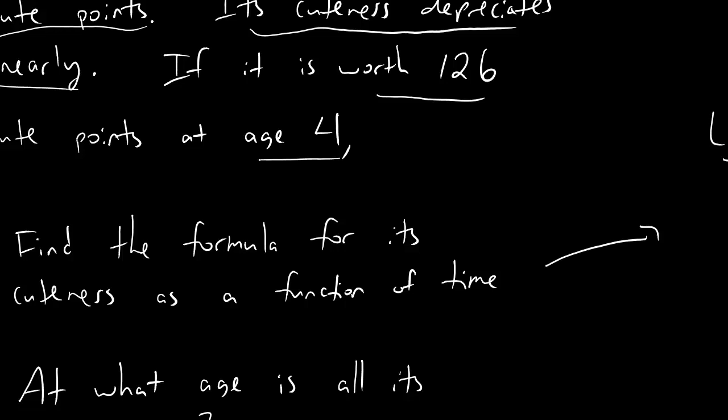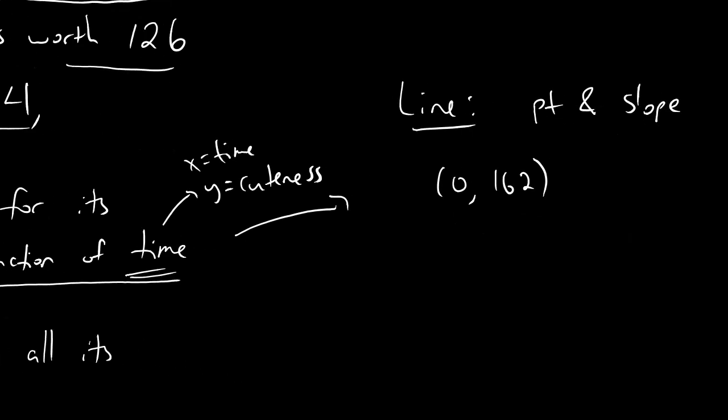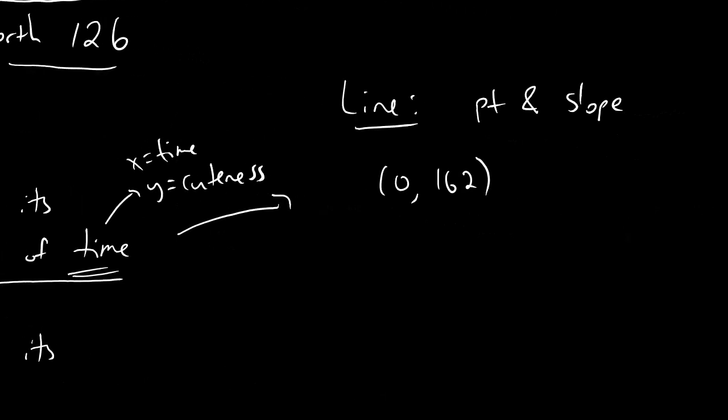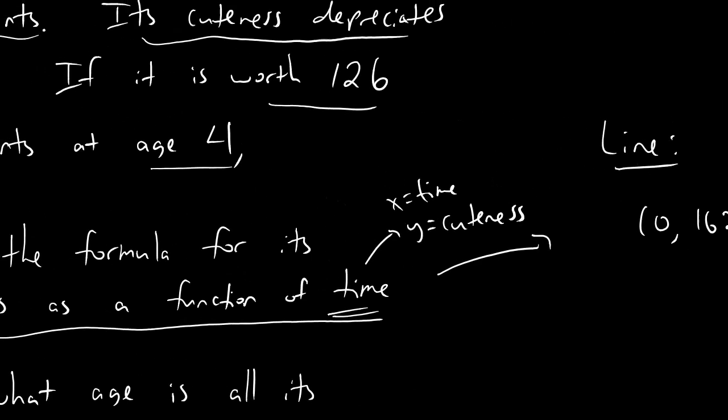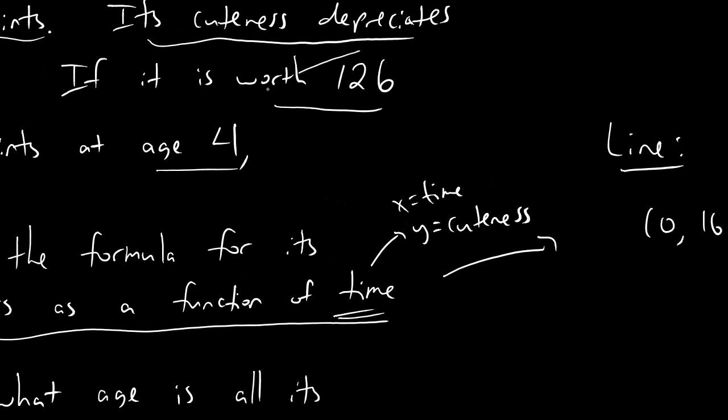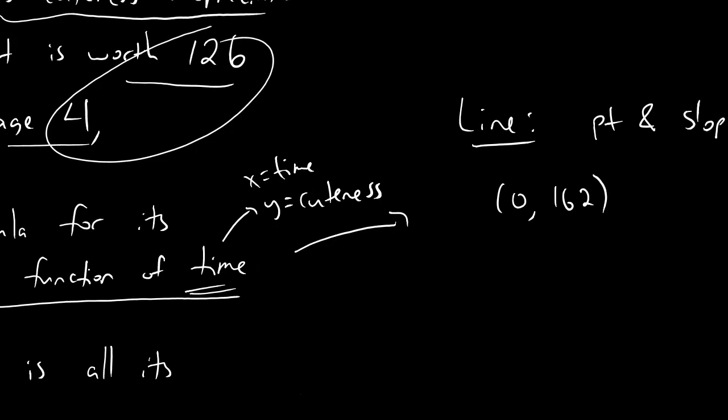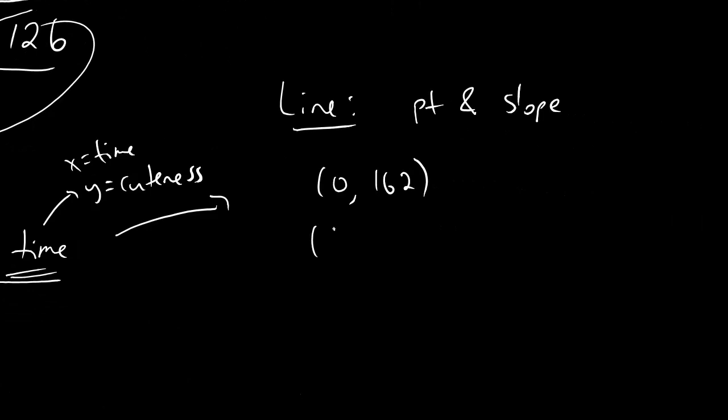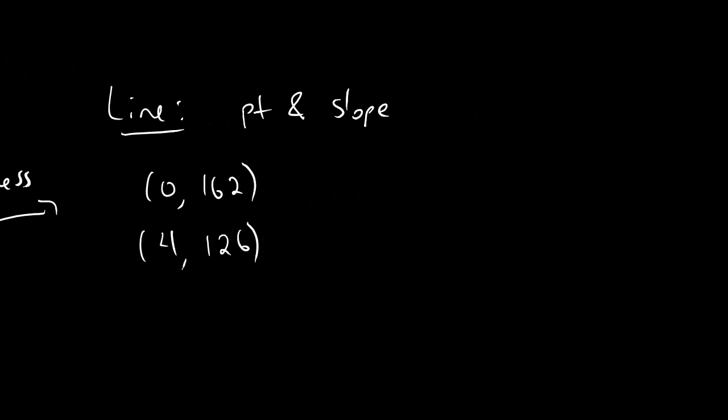The two points come from the fact that in the beginning, when it's a newborn baby, when it's brand new, it's worth 162 cute points. So here's how we turn that into a point. The beginning always means the time is zero. So our first point is going to be (0, 162). If there's ever anything that happens in the beginning, and if you're sure that your x values are in terms of time, then the original x value is just zero. Let's actually take a second here and make sure we're cool with that, that the x value is in terms of time. But look here, it says find the formula for the cuteness as a function of time. As a function of time, this just means x equals time. And then of course, y has to be what the function value gives you, which is cuteness.